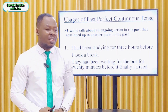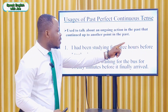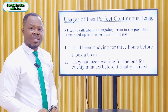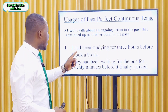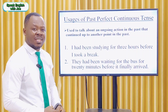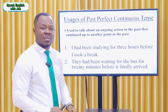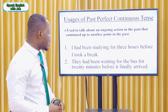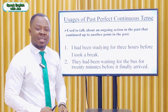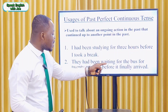Example one: 'I had been studying for three hours before I took a break.' In this sentence, the first ongoing action is 'I had been studying', which is in the past perfect continuous tense. The duration is 'for three hours', and the second action is 'I took a break', which is in the past simple tense.